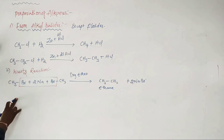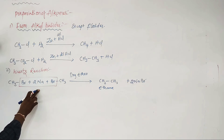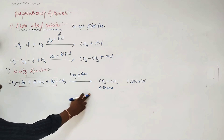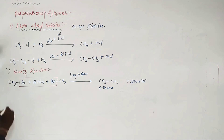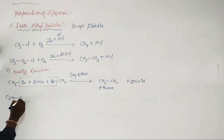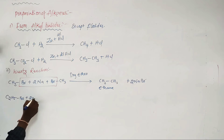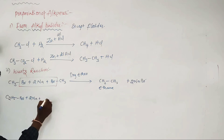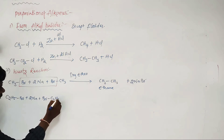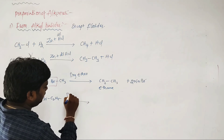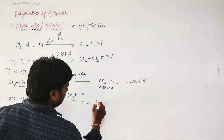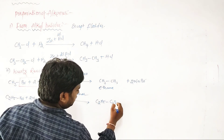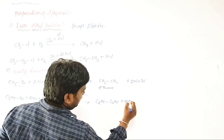From 2 moles of methyl bromide, reacting with 2 moles of sodium metal in the presence of dry ether, ethane is the product. This is the Wurtz reaction. For example: C2H5Br + 2Na + BrC2H5 in the presence of dry ether gives C2H5–C2H5 plus 2 NaBr.